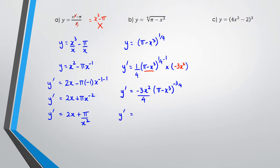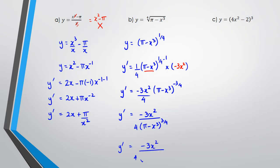We can simplify one more step and write it as negative three x squared over four times (pi minus x cubed) to the power of three quarters, or equivalently negative three x squared over four times the fourth root of (pi minus x cubed) to the power of three. In terms of your exams, you can stop at the earlier step — the further simplification is just good practice for your algebraic skills.